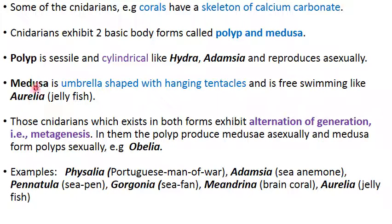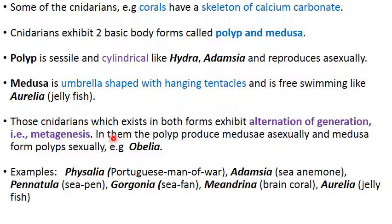Some cnidarians have only the polyp stage, while others have both stages and show what is called alternation of generation, or metagenesis. In metagenesis, the polyp produces the medusa asexually, and the free-swimming medusa has gonads that form gametes, which come together to give rise to the polyp sexually. An example showing both polyp and medusa stages with metagenesis is Obelia.